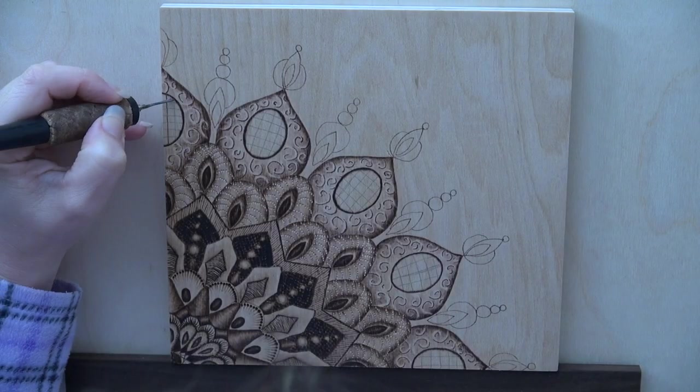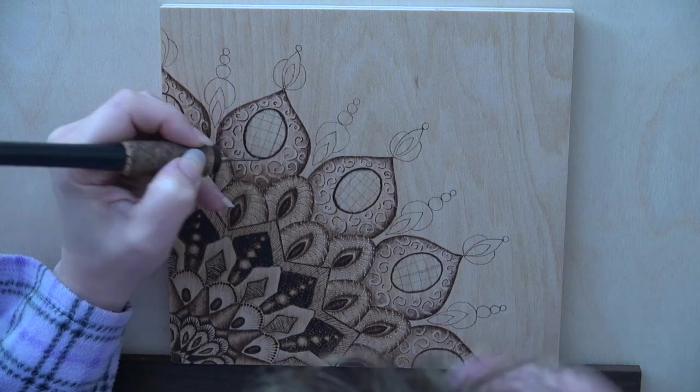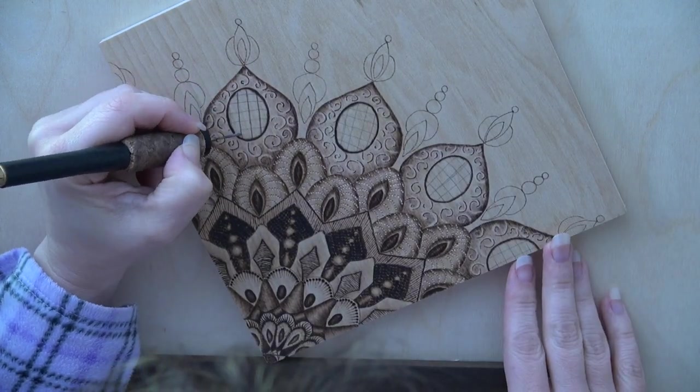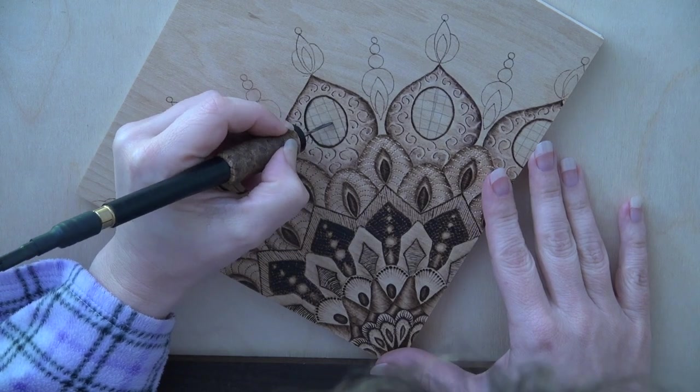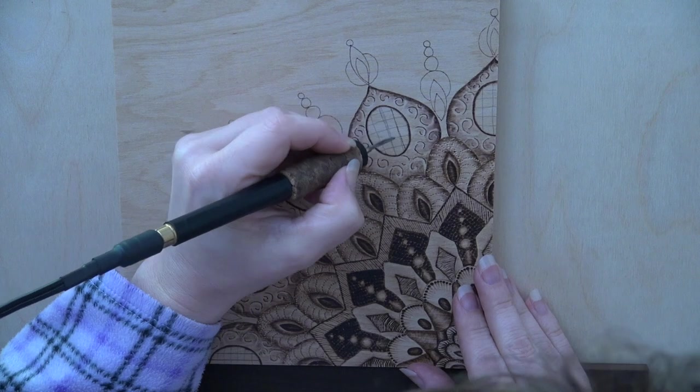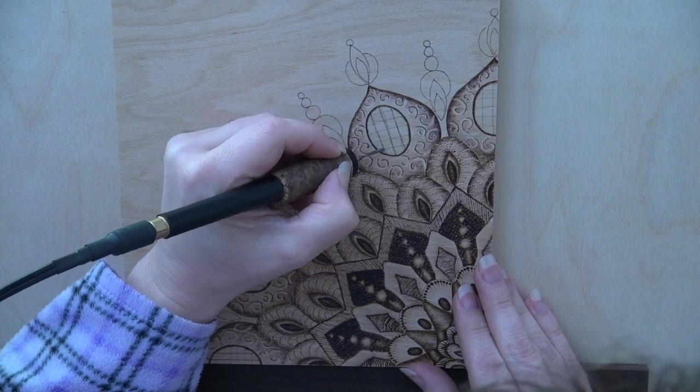Use a pencil to draw grid lines in the ovals. Then use a writer pen tip to burn in those lines. I have found that it was faster to burn in all of the vertical lines, and then burn in all of the horizontal lines, or vice versa.